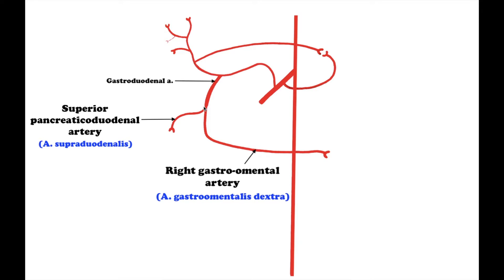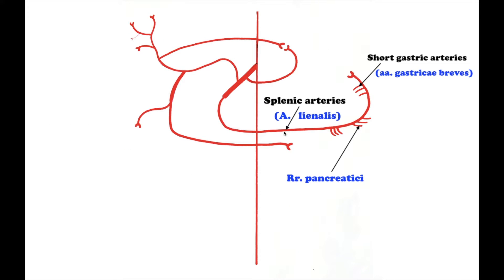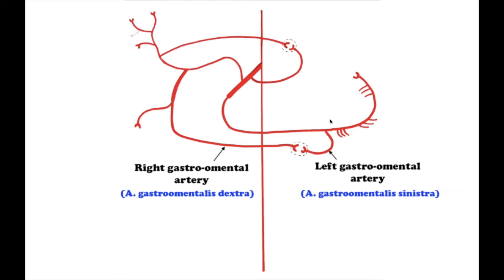The last branch of the celiac artery is the splenic artery, arteria lienalis, which is the largest of the three terminal branches of the celiac trunk. It passes along the superior border of the pancreas to the spleen, where it divides into five to eight terminal branches. Along its course, the splenic artery gives off several branches before entering the hilum. The distal part gives off the short gastric arteries and the left gastro-omental artery, arteria gastroepiploica sinistra, which passes from left to right on the greater curvature of the stomach and anastomoses with the right gastro-omental artery to form an arterial arch.